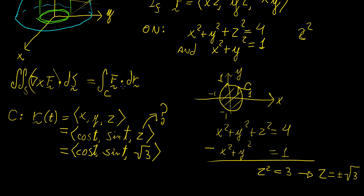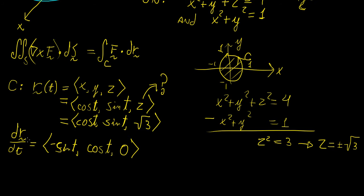Okay, so now that we have that, we can actually proceed and take the derivative of that. So we know that this is going to be, so let's take dr/dt. So what is this going to be? Well, this is going to be -sine t, cosine t, and then the last one is just 0.